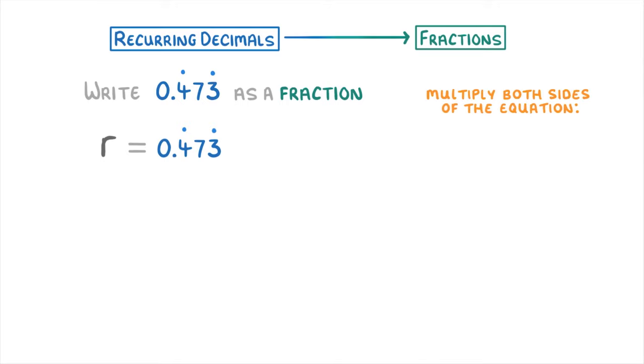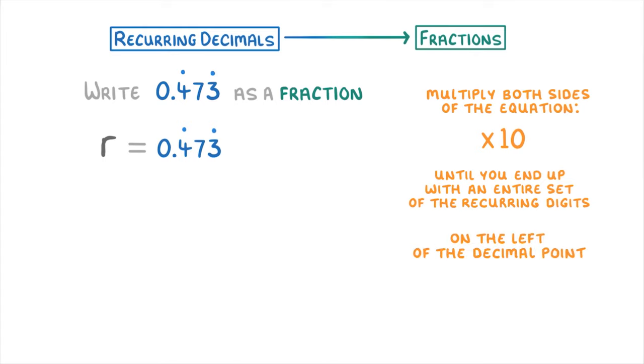Next you need to multiply both sides of the equation by 10 until you end up with one entire set of the recurring digits on the left of the decimal point. So we want to end up with a whole set of 473 on the left of the decimal point.